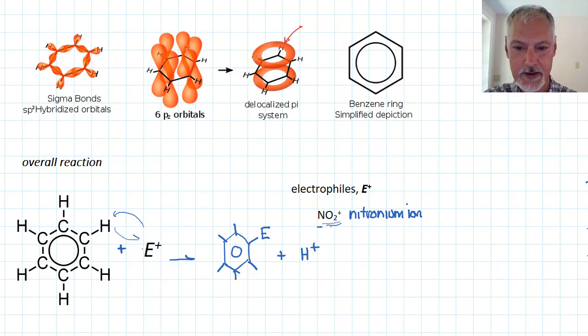Now, a little bit about how this nitronium ion is made. This is a particularly strong electrophile. Having a positive charge makes it really look for or be attracted to negative things, and especially these electrons up here.